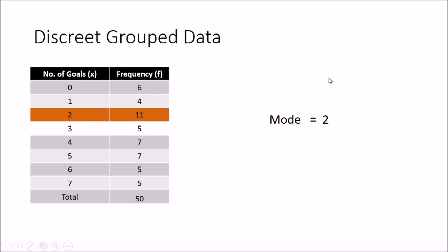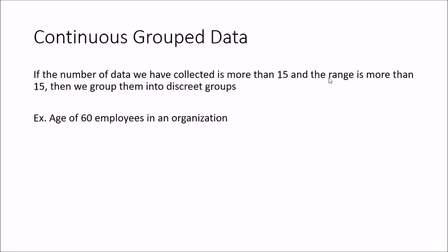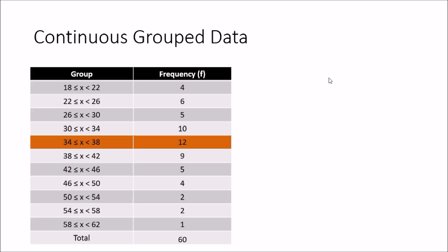The third type is the continuous grouped dataset. We will look at the age of 60 employees in an organization. We have a set of groups, so the first thing we have to do is find the group which contains the highest frequency. In this case, the group from 34 to 38 contains a frequency of 12, which is the highest. We have now found the modal group.